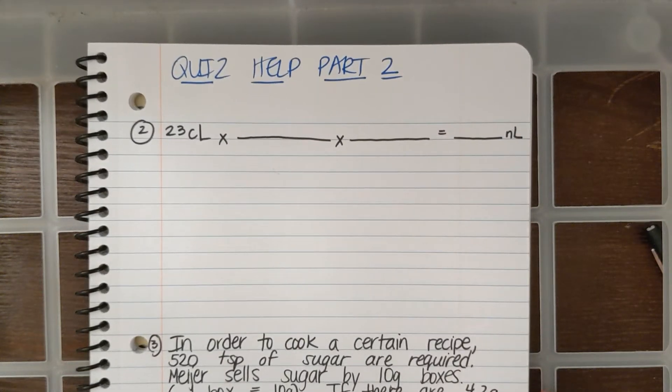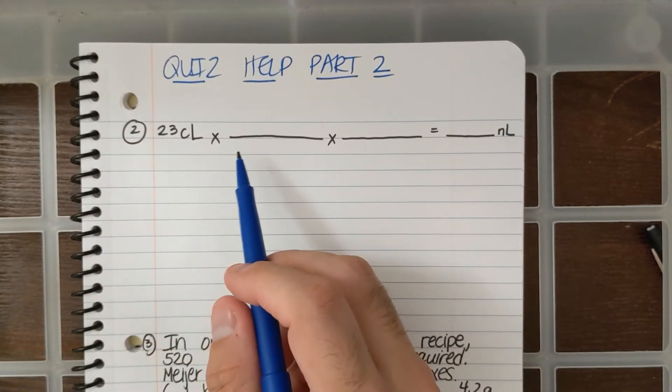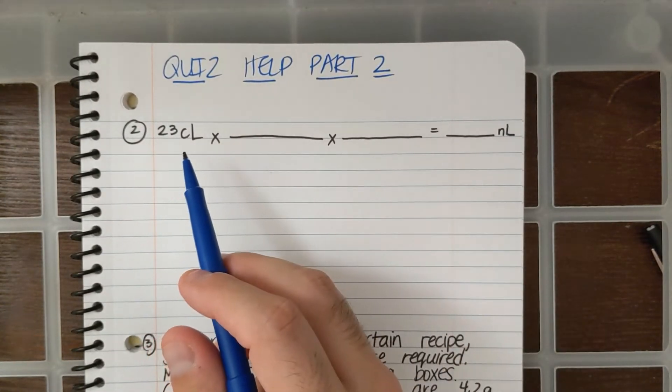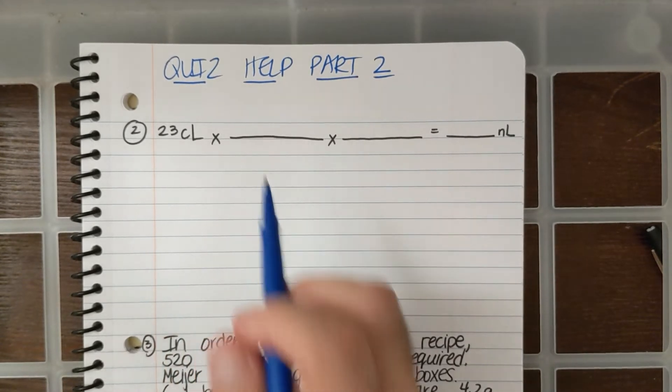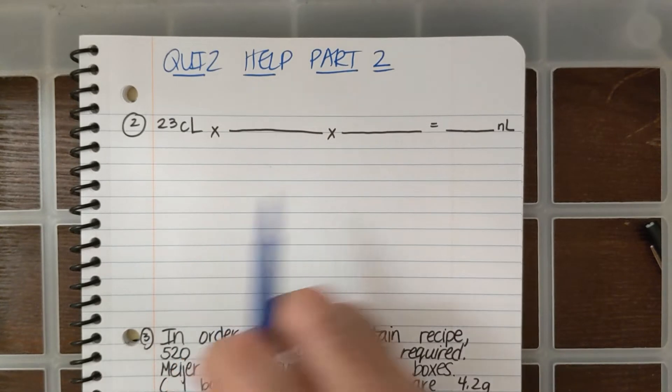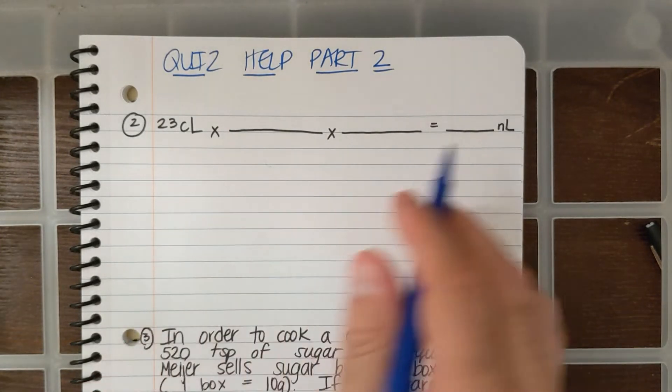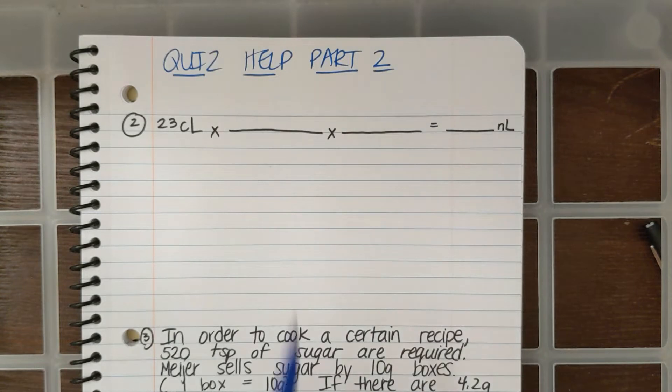Alright, hey Honors Chemistry, here is part two of Quiz Help with Dimensional Analysis. You'll get a question asking you to go from one unit to the other. This question says it's going from 23 CL to NL. CL is centiliters and NL is nanoliters.